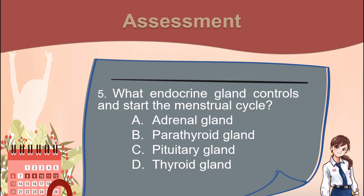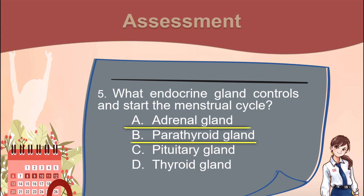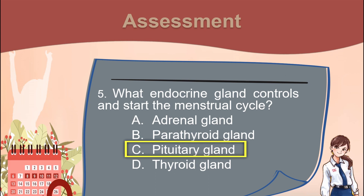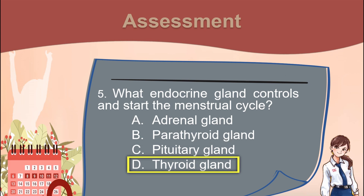Number 5. What endocrine gland controls and starts the menstrual cycle? A. Adrenal gland. B. Parathyroid gland. C. Pituitary gland. D. Thyroid gland.